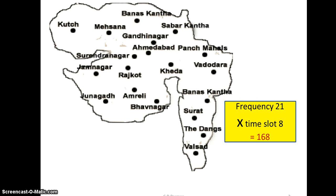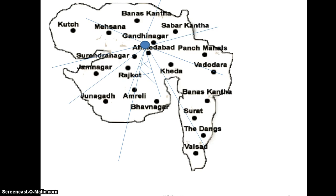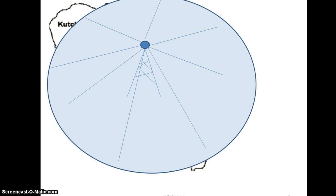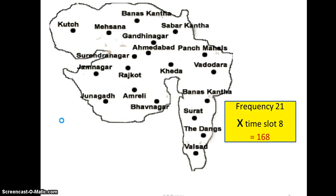Initially, if we consider the entire state as one particular cell, it is covered by a large area using one very high antenna which is omnidirectional, covering the entire state. This omnidirectional coverage — the footprint of the antenna — covers almost the entire state. So at any time in the entire state we can have only 168 users communicating simultaneously. But in reality users are in the lakhs, and thousands need to communicate at the same time.